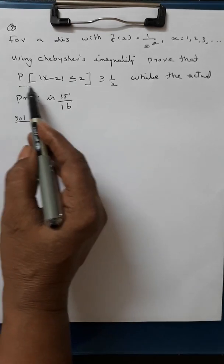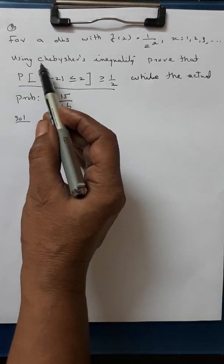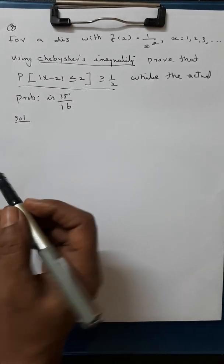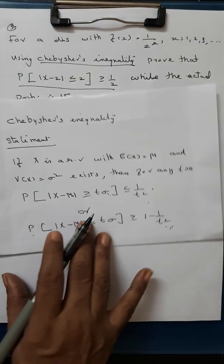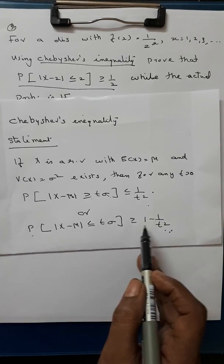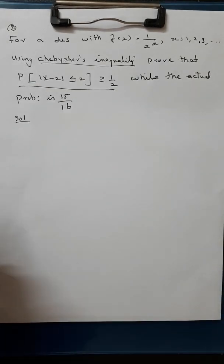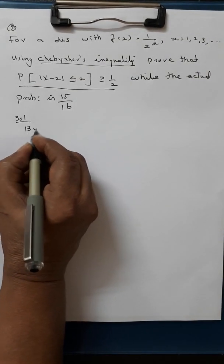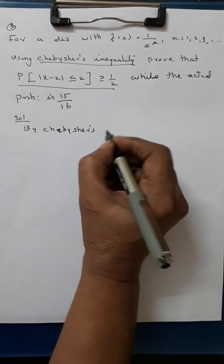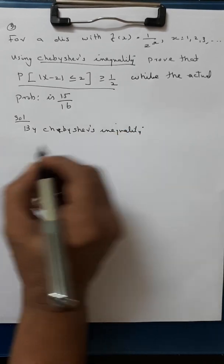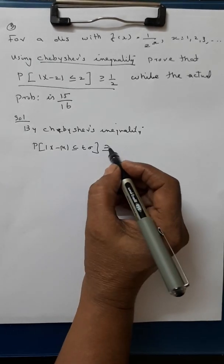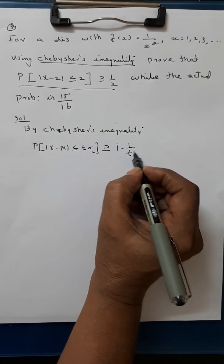Here we want to prove this result using Chebyshev's inequality. The appropriate form of Chebyshev's inequality for proving this result is: P of |x minus mu| less than or equal to t sigma, greater than or equal to 1 minus 1 by t square. So, by Chebyshev's inequality, P of |x minus mu| less than or equal to t sigma, greater than or equal to 1 minus 1 by t square.